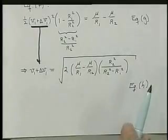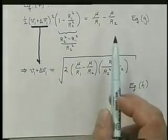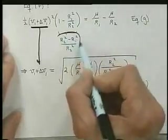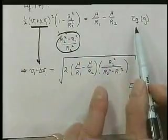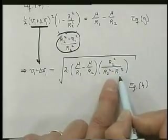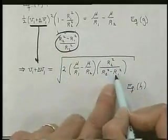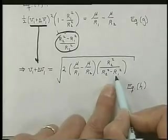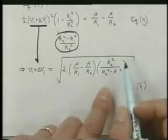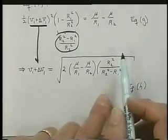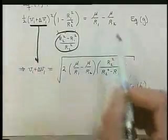Just the V1 plus delta V1. To solve for that, the first thing we do is we take this fraction here and divide it into the other side, so we have R2 squared over R2 squared minus R1 squared. In other words, this gets inverted and goes here, and then we multiply by 2 to get rid of the half.